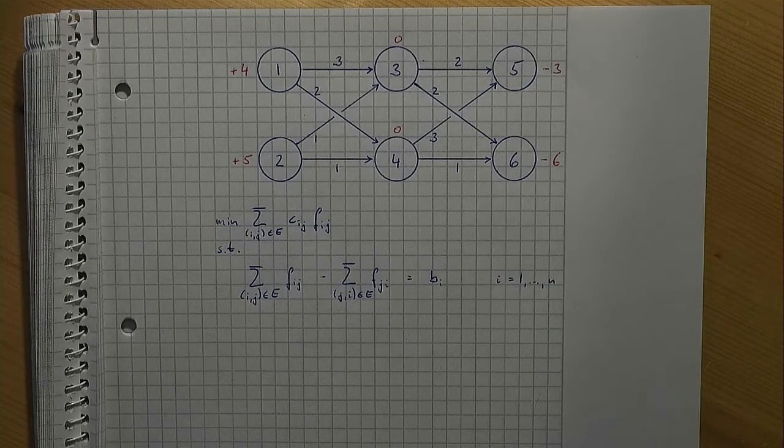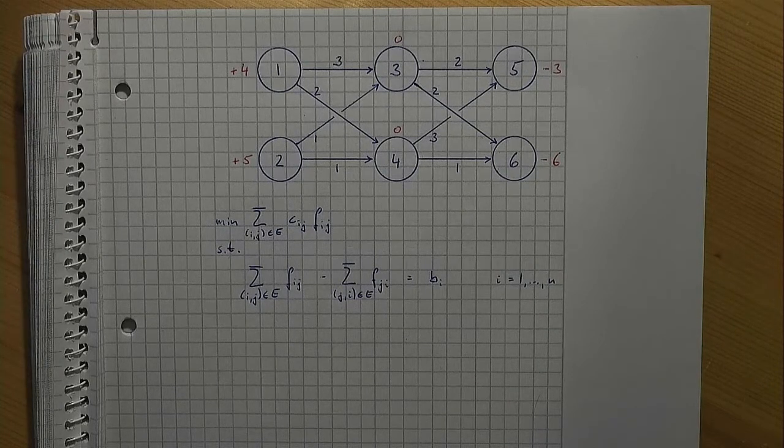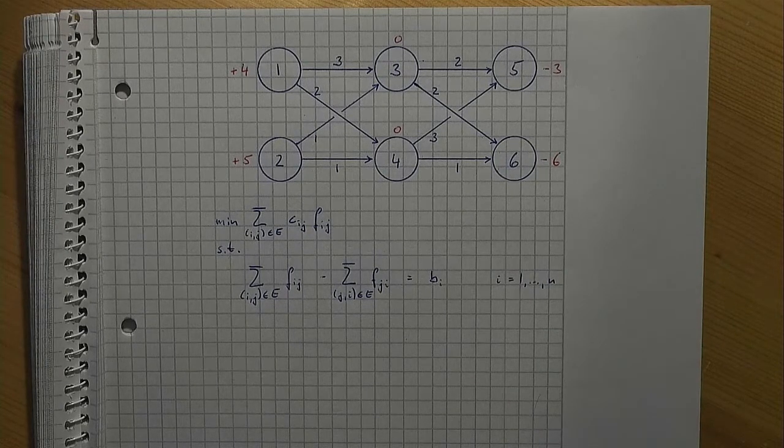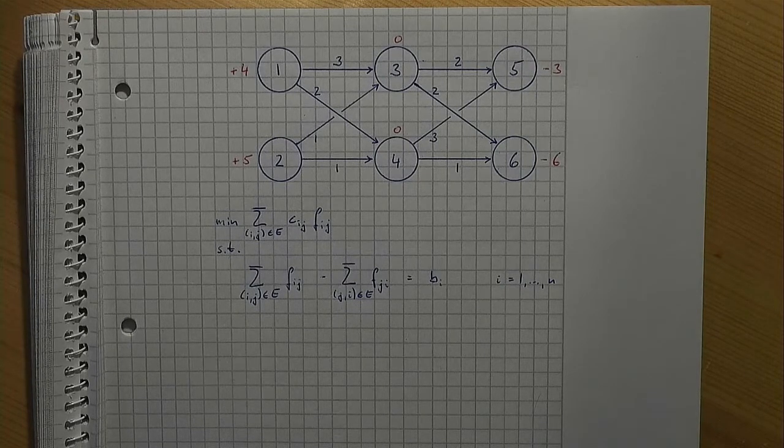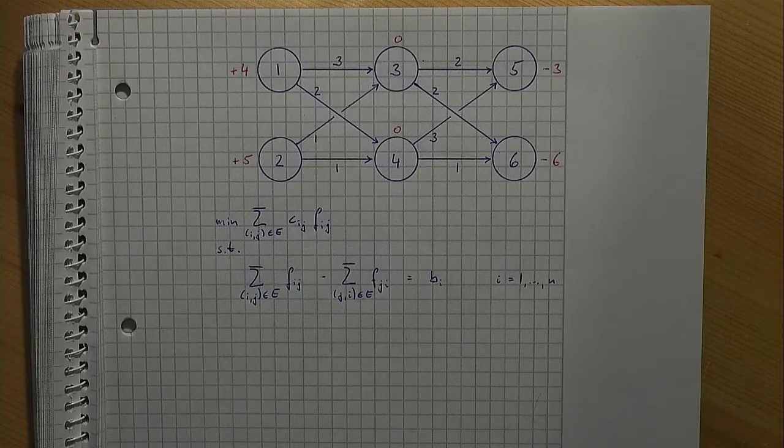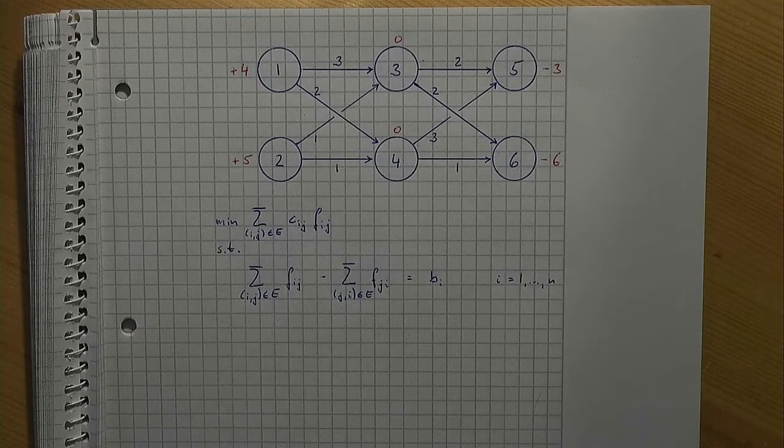The most interesting part of this model are the constraints. They simply state that for each node i, the outflow from that node minus the inflow to that node must be equal to the node weight. These constraints are also called flow balance constraints. And finally, flows must not be negative.